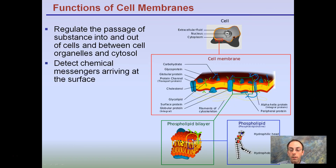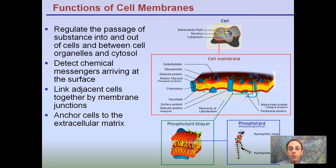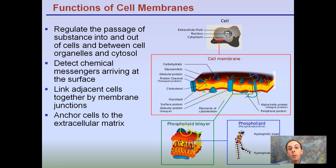Starting with the basics, this description image shows our cell, focusing on a zoomed-in version — our cell membrane. There are carbohydrates, glycoproteins, protein channels, cholesterol, and glycolipids. If we zoom in even closer, looking at the area in the green box, that's our phospholipid bilayer — our bilayer of phosphates and lipids.